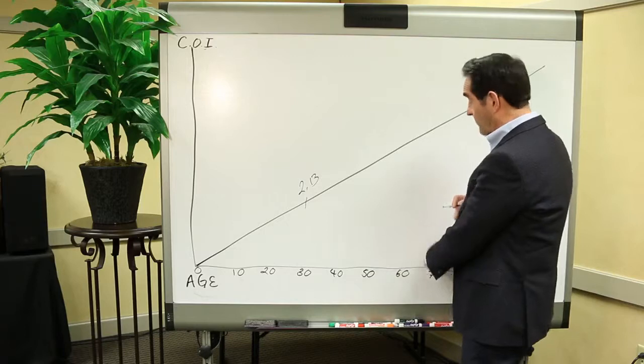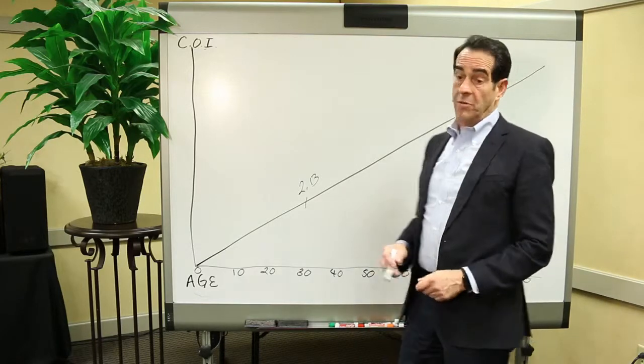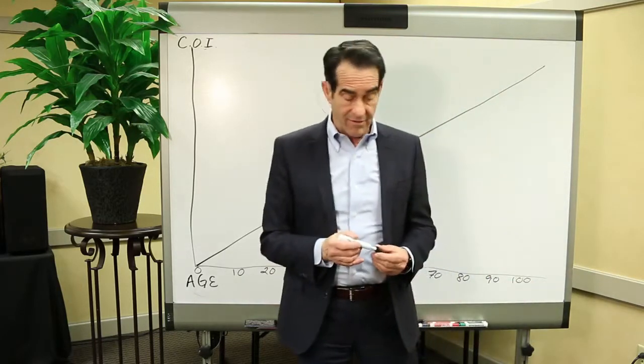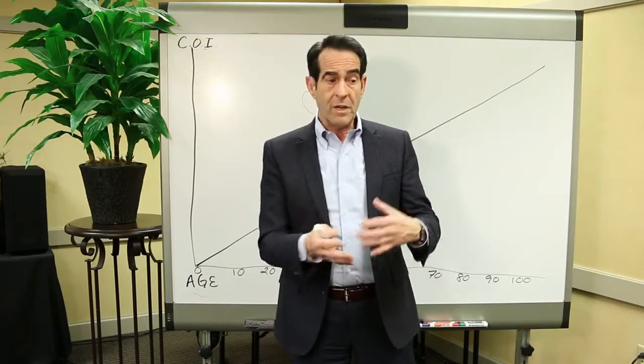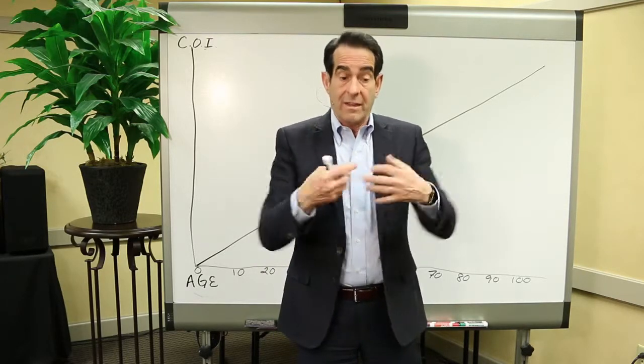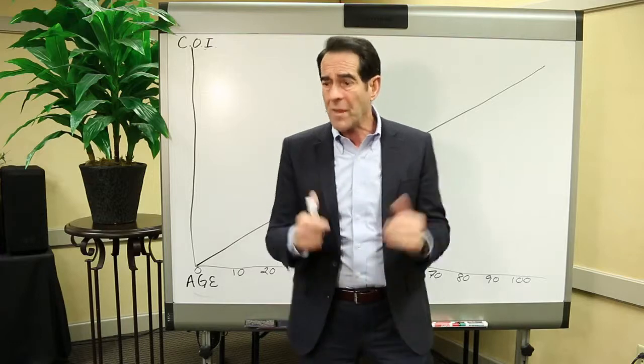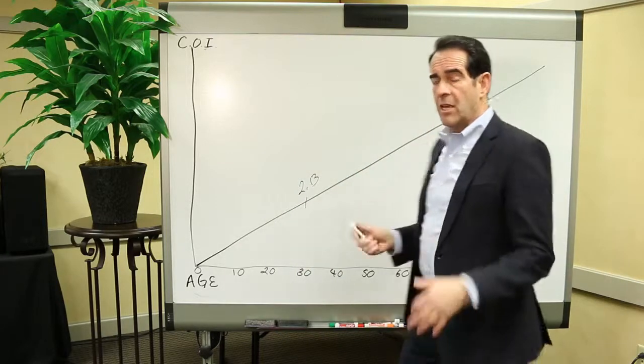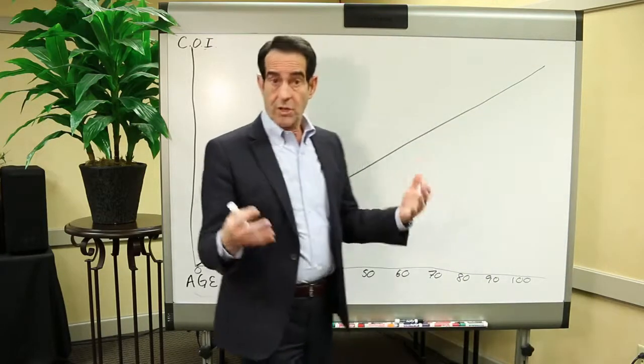By age 65, it used to be that probably a third of American males had died or had a serious problem. And now, mortality is extending. So term insurance is just the pure cost of insurance.